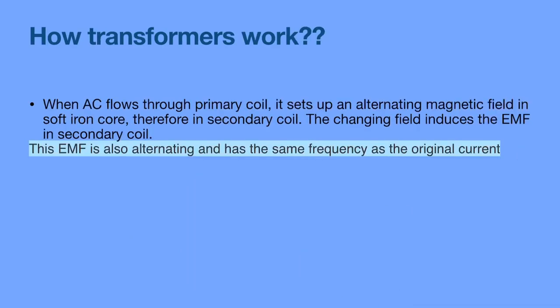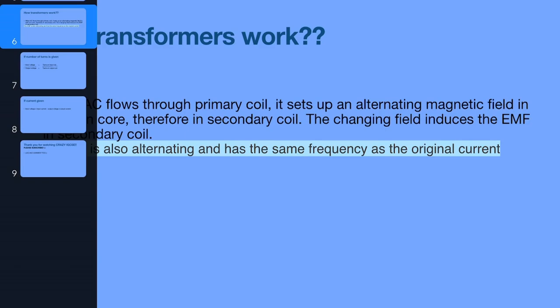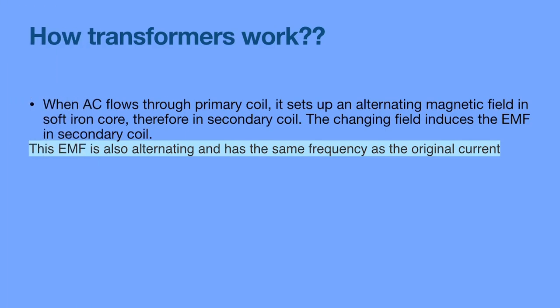So how do transformers work? When the AC current flows through the primary coil, it sets up an alternating magnetic field in the soft iron core. Therefore, in the secondary coil, the changing field induces an EMF in the secondary coil. This EMF is also alternating and has the same frequency as the original current.